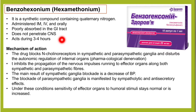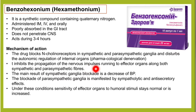Mechanism of action: this drug blocks the N-cholinoreceptors in sympathetic and parasympathetic ganglia, disturbing the autonomic regulation of internal organs — causing pharmacological denervation. It inhibits propagation of nervous impulses running to effector organs along both sympathetic and parasympathetic fibers.